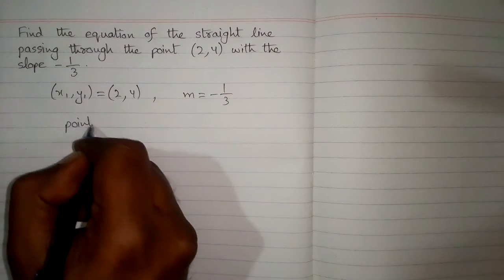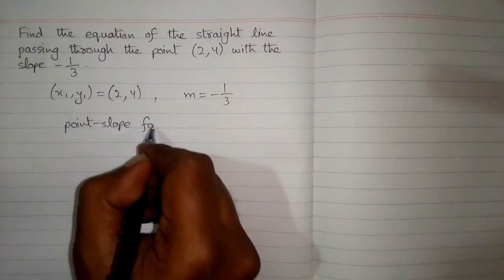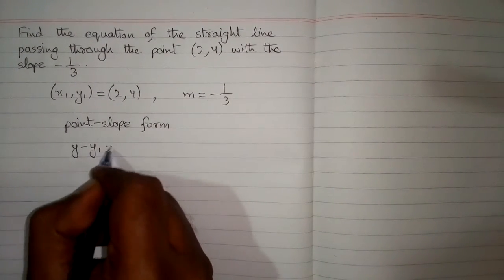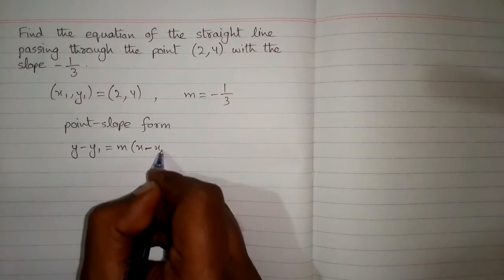Now we will use point-slope form of the equation which is y minus y1 is equal to m times x minus x1.